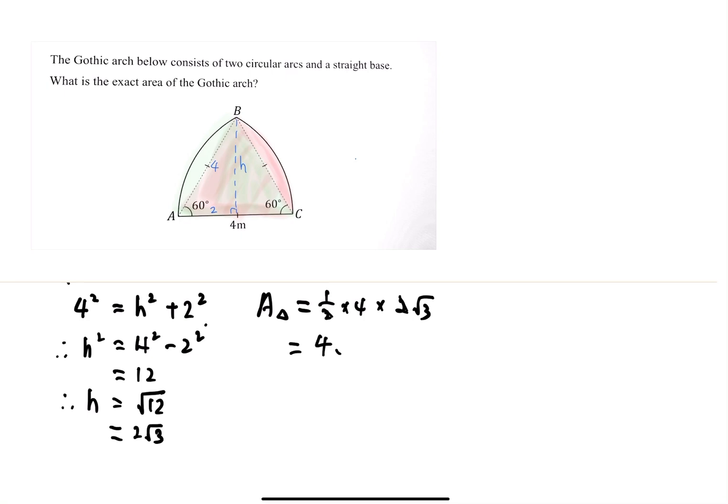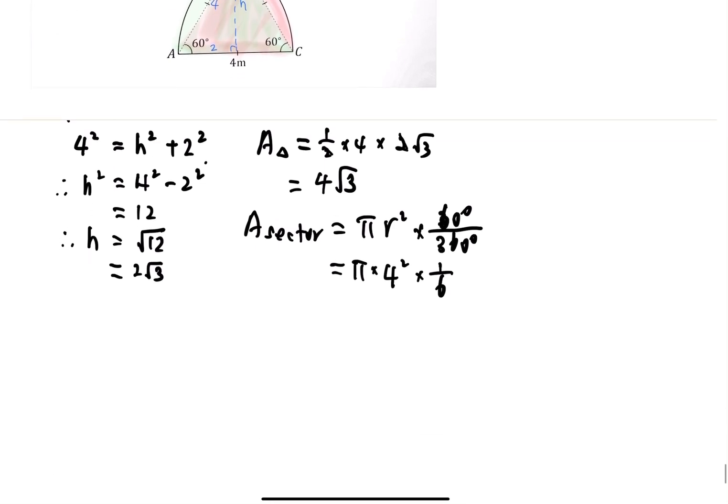Area of sector equals πr² times 60° over 360°, which equals π times 4² times 1/6, so that's the area of sector which equals 16π/6.